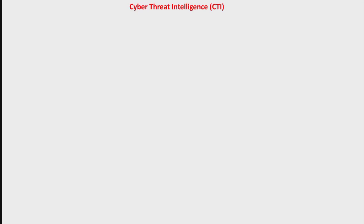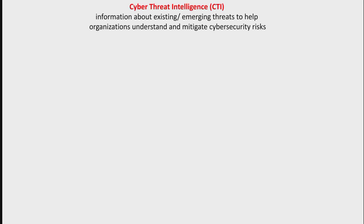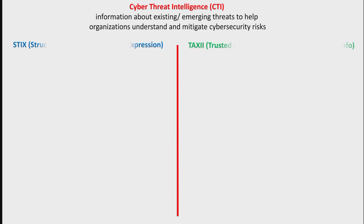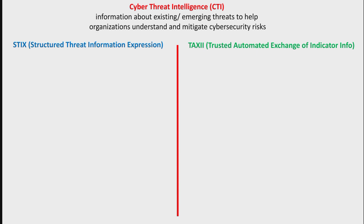Cyber threat intelligence, or CTI, is information about existing or emerging threats to help organizations understand and mitigate cybersecurity risk. In this video, I will discuss two protocols or standards for sharing cyber threat intelligence between different organizations — for example, government organizations and the private sector. The Department of Homeland Security has established and uses these standards to share cyber threat intelligence with the private sector.